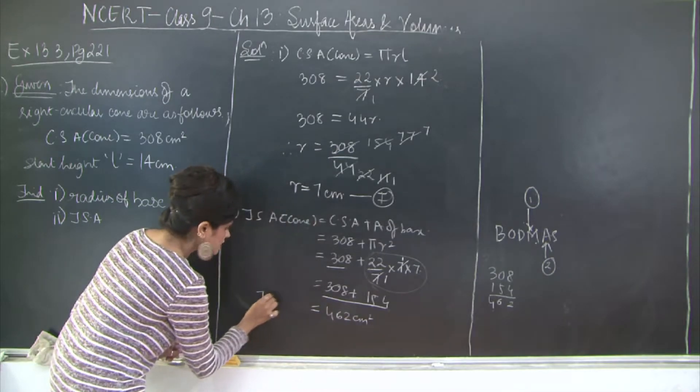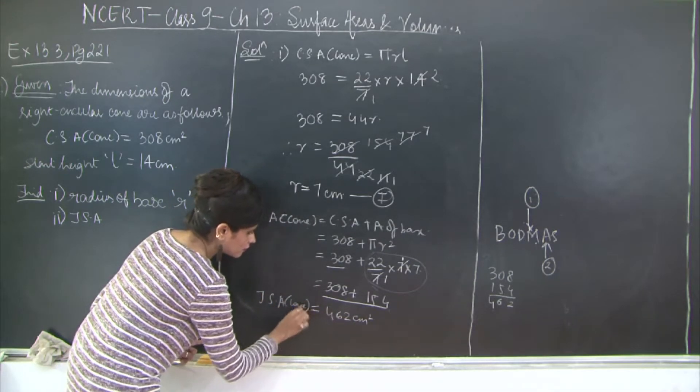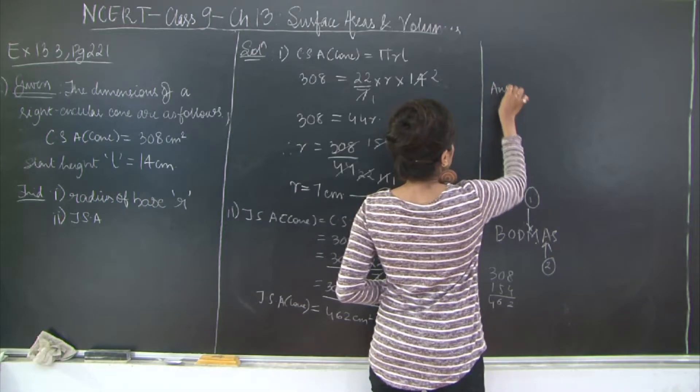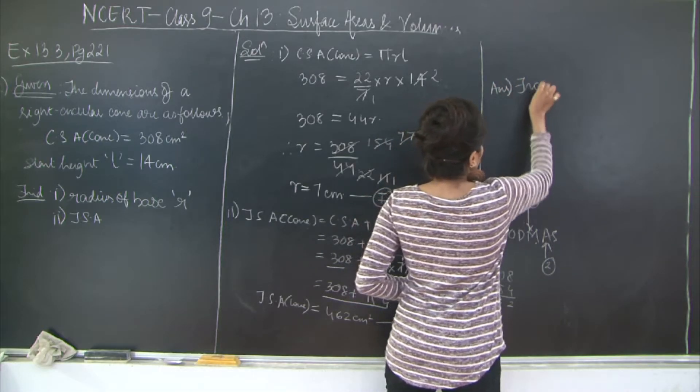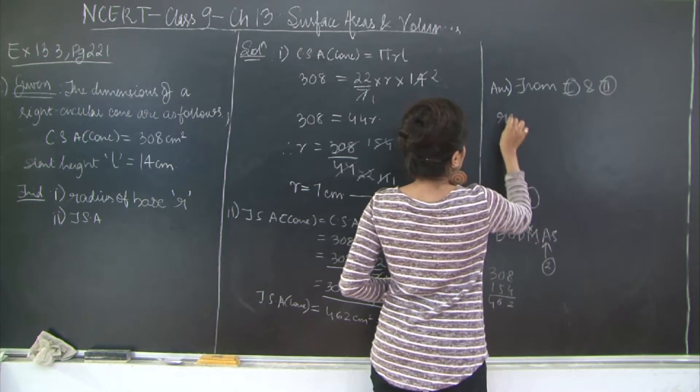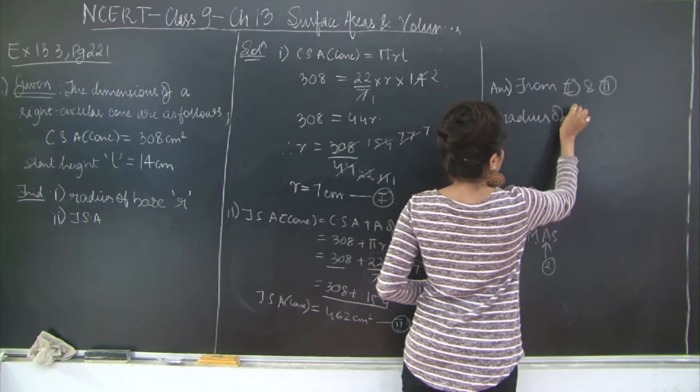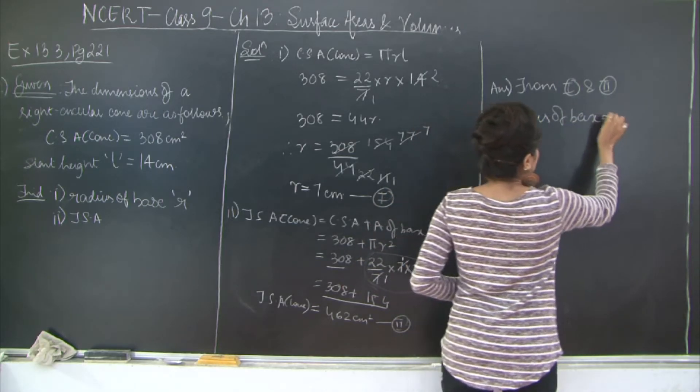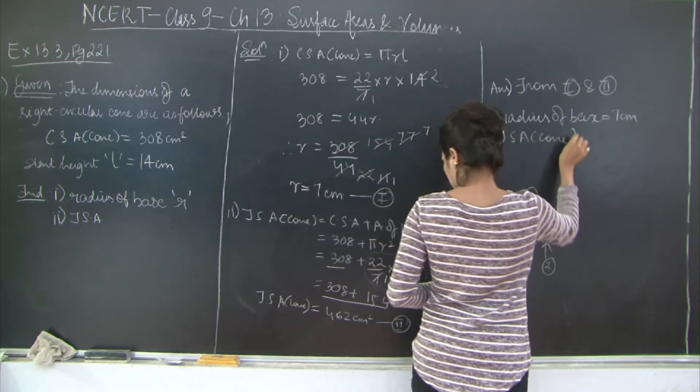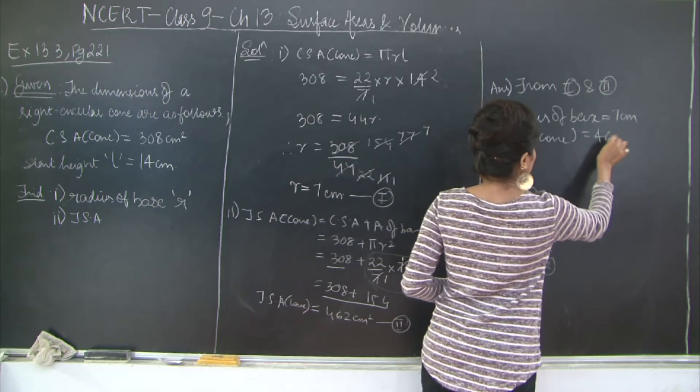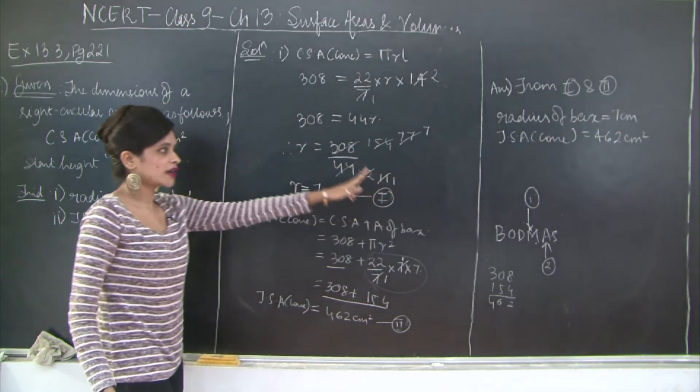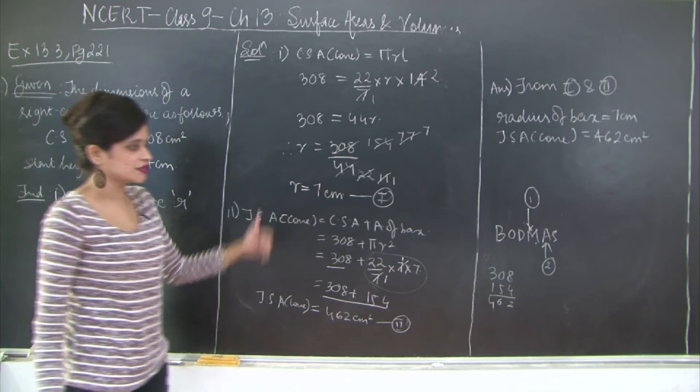This is your total surface area of 462. Let's mark this as Roman number 2. Now from 1 and 2 you can write your answer. From Roman numbers 1 and 2, radius of base is equal to 7 cm. And total surface area of cone is equal to 462 cm². Also notice the difference in the units. For radius it is cm, whereas for the area or the total surface area it is cm².